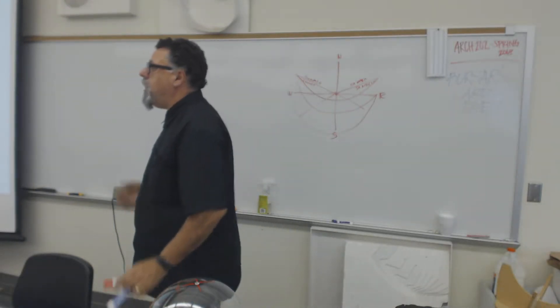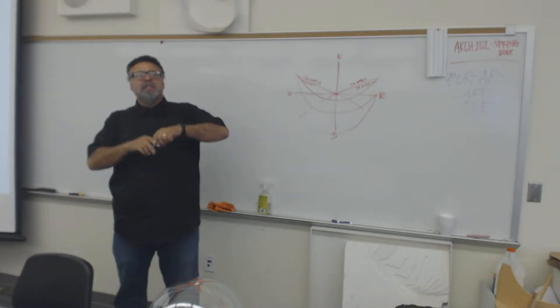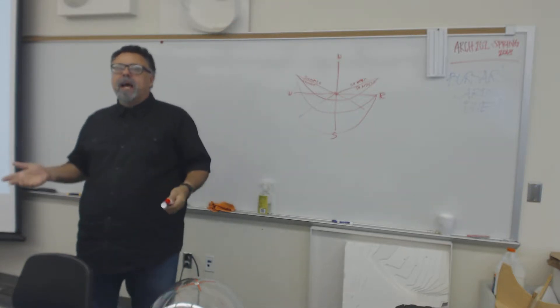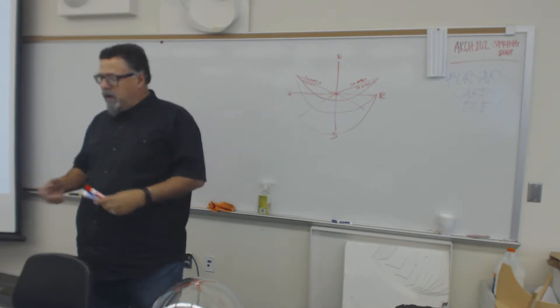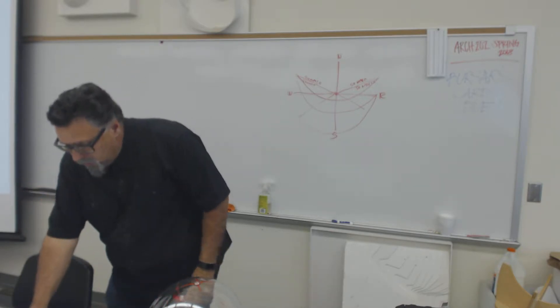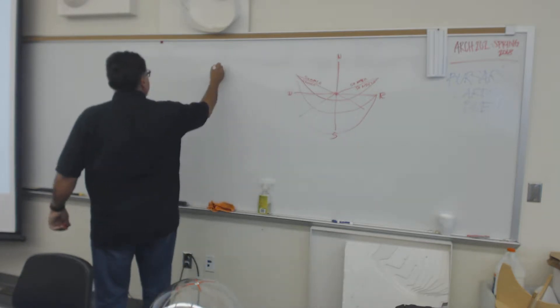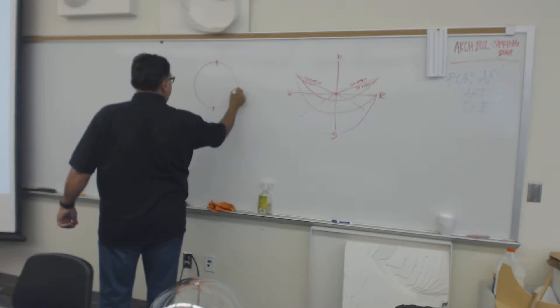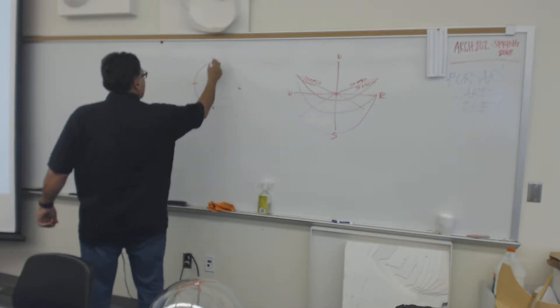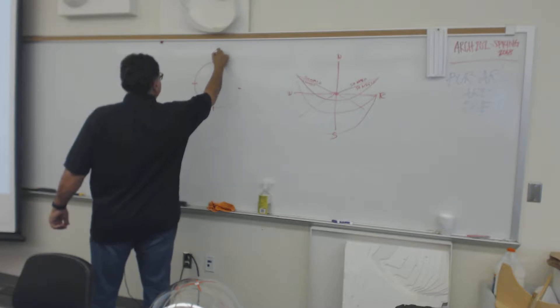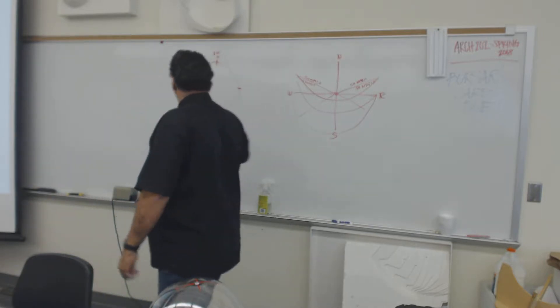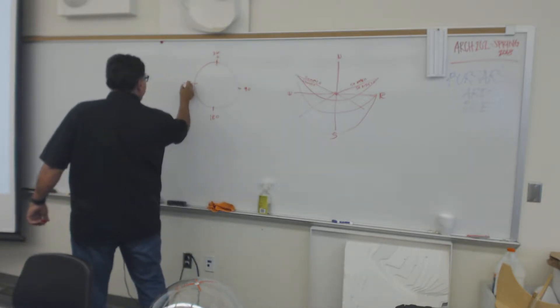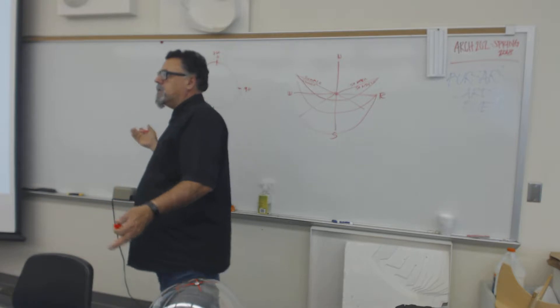In order to understand how we find the position of a celestial body like the sun, we have to establish a way of measuring. You guys probably already know that our compass is divided into 360 degrees. So this is 0 and 360, this is 90, this is 180, and this is 270. And then there's everything sort of in between.